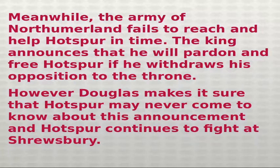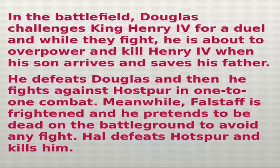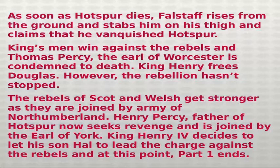On the way to the battleground, Hal encounters the rogue men enlisted by Falstaff and discovers that Falstaff has also embezzled the salaries of soldiers who fought and died in battle. Meanwhile, the army of Northumberland fails to reach and help Hotspur in time. The King announces he will pardon Hotspur if he withdraws his opposition, but Douglas ensures Hotspur never hears this offer, and Hotspur continues to fight at Shrewsbury. In the battlefield, Douglas challenges King Henry IV to a duel and is about to overpower him when Hal arrives and saves his father. Hal defeats Douglas and then fights Hotspur in one-to-one combat.